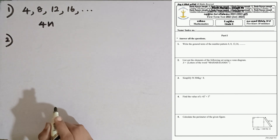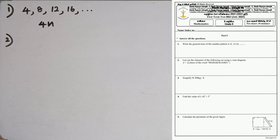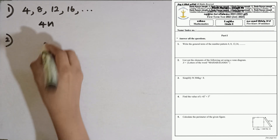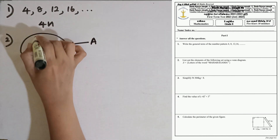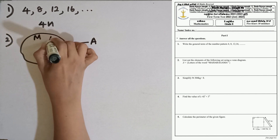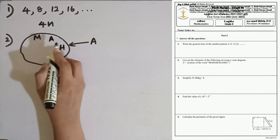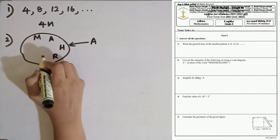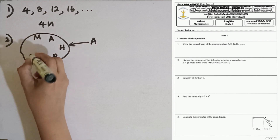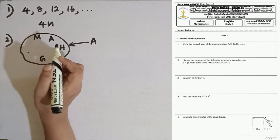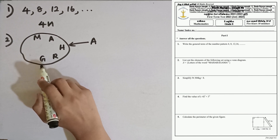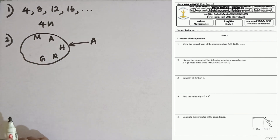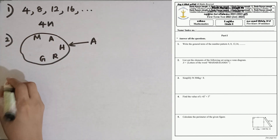Question number 2. List out the elements of the following set using a Venn diagram. Set A is given as the letters of the word Maharagam. I can use a closed plain figure and name it as capital A. Starting from M, A, H — now you can't write A again — then R, G. M cannot be written again. So how many letters are there? 1, 2, 3, 4, 5. These are the elements of this Venn diagram set.